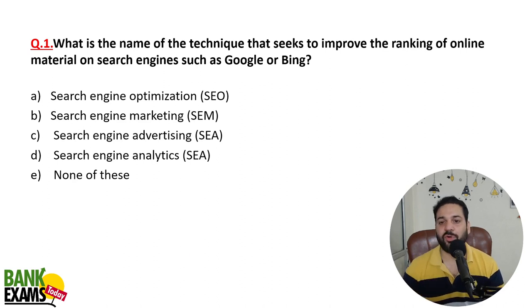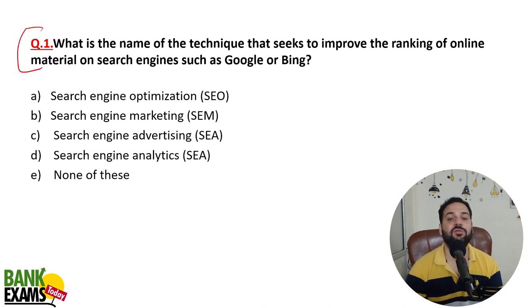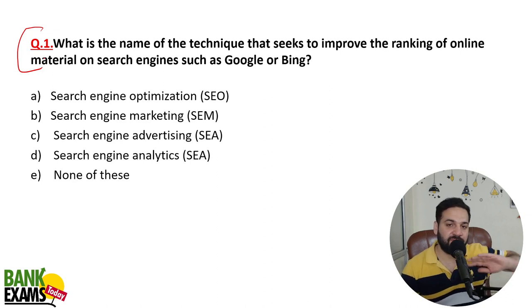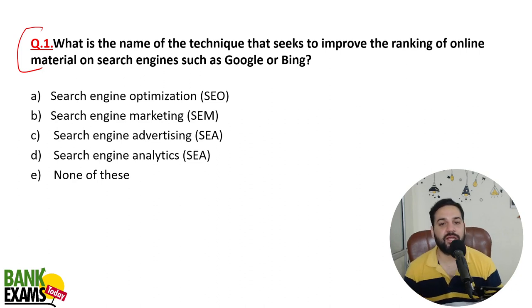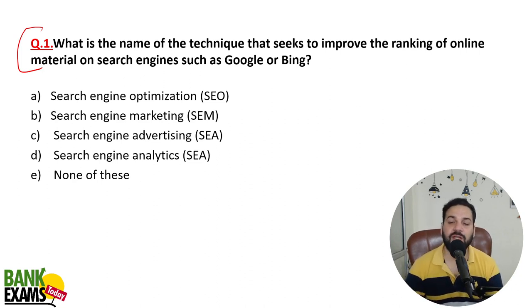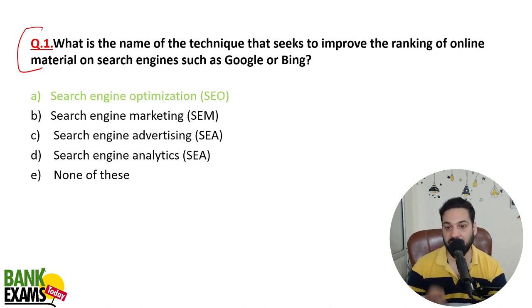What is the name of the technique that seeks to improve the ranking of online material on search engines such as Google or Bing? To rank your website higher on Google or Bing, you would do link building, create useful content, and build a fast website. All these are SEO techniques — search engine optimization. You are optimizing your website from a search engine point of view.